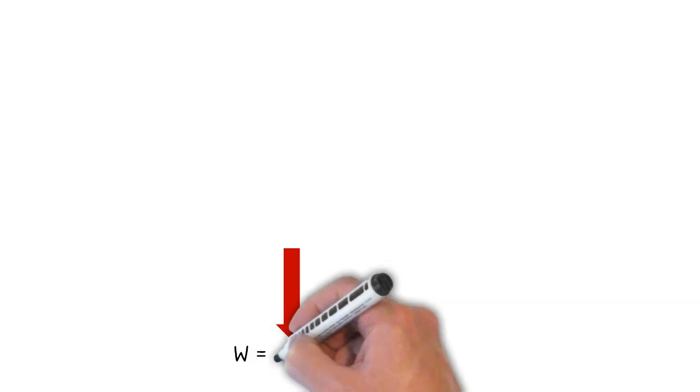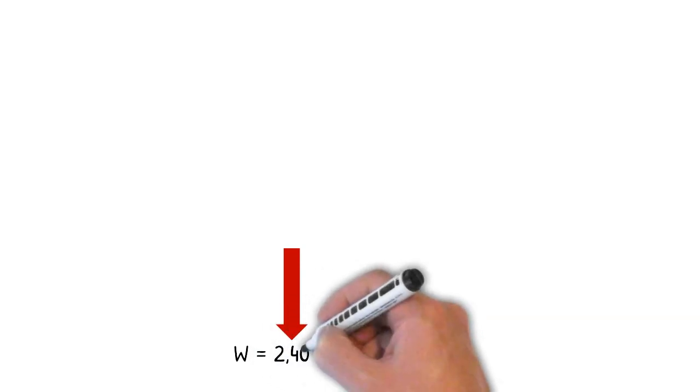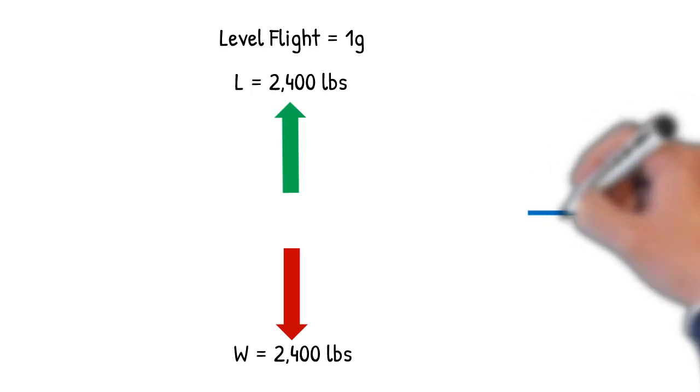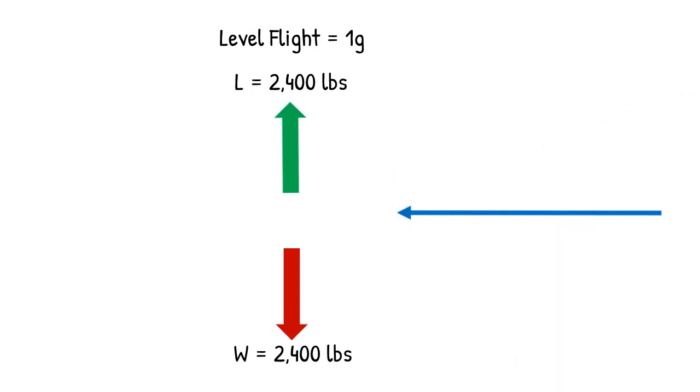For our first scenario, let's assume we're just about at the max gross weight, say, 2,400 pounds. For the airplane to maintain flight, we either need to get more speed, or increase the angle of attack.